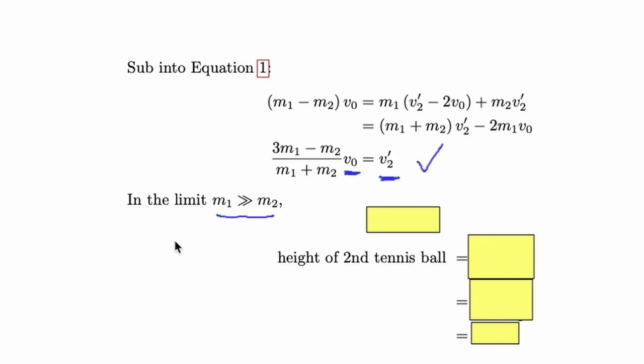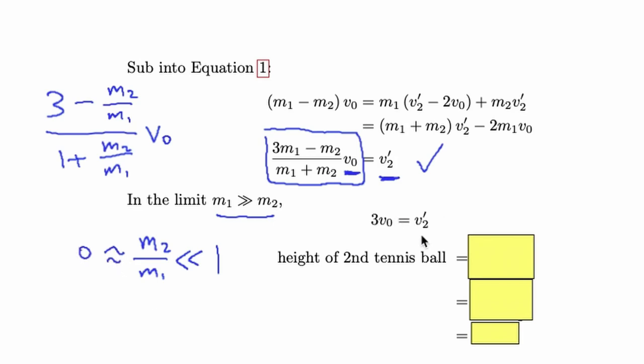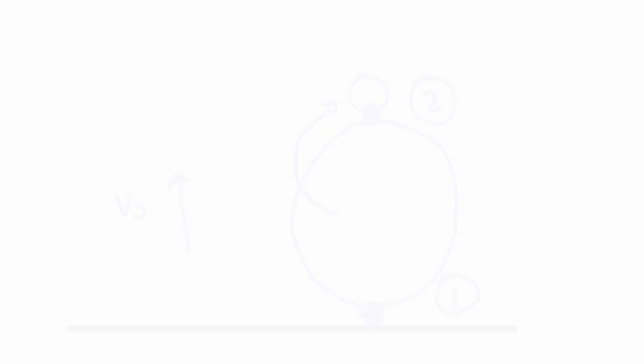Now, in the question, we take the limit in which m1 is much greater than m2 and this can be rewritten as the expression that m2 over m1 is much less than 1. We write the left-hand side in terms of m2 over m1 and taking the limit in which m2 over m1 goes to 0 we obtain the following expression for v2'.